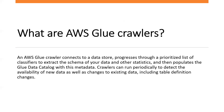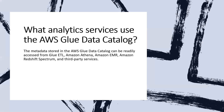What are AWS Glue crawlers? An AWS Glue crawler connects to a data store, progresses through a prioritized list of classifiers to extract the schema for data and other statistics, and then populates the Data Catalog with metadata. Crawlers can run periodically to detect the availability of new data as well as changes to existing data, including table definition changes. We can customize Glue crawlers to classify our own file types, and crawlers automatically add new tables, new partitions to existing tables, and new versions of table definitions. Analytics services that use the AWS Glue Data Catalog include Glue ETL, Amazon Athena, Amazon EMR, Amazon Redshift Spectrum and third-party services.